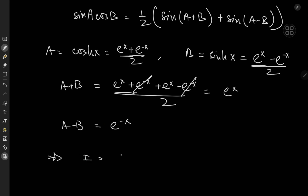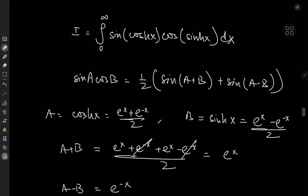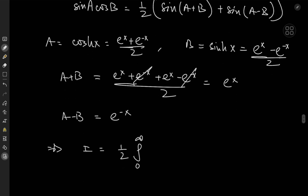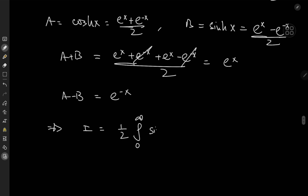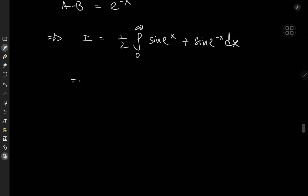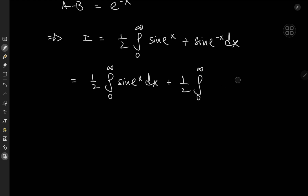This implies that the target integral I sorts out to one half the integral from zero to infinity of sine(e^x) plus sine(e^{−x}) dx. Making use of the linearity of the integration operator, we write this as one half the integral from zero to infinity of sine(e^x) dx, plus one half the integral from zero to infinity of sine(e^{−x}) dx.